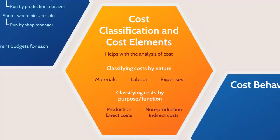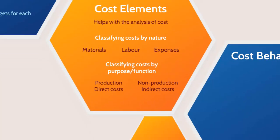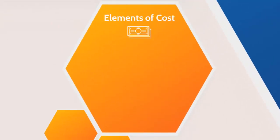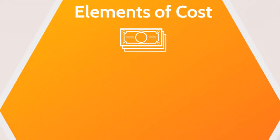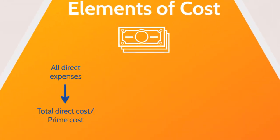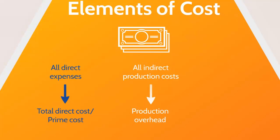Now we know the different cost classifications, it's useful to group these together to form the elements of cost — the term we use to describe the total costs for the group. All of those direct costs can be grouped together into a figure we call the total direct costs, or the prime costs. We do exactly the same with those indirect costs — they're grouped together to form a figure we call the production overhead. We can then add the production overhead to the prime cost, which gives us the production cost, also called the factory cost.